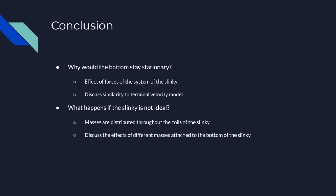In conclusion, the biggest takeaway from this lab is why the bottom of the slinky is stationary. It's the internal forces — the spring force — that cause the slinky to fall more at a constant velocity. The bottom of the slinky doesn't have enough information to be affected by gravity at that point. This is close to the terminal velocity model because in terminal velocity, drag force is not exactly constant throughout a fall — it increases over time.